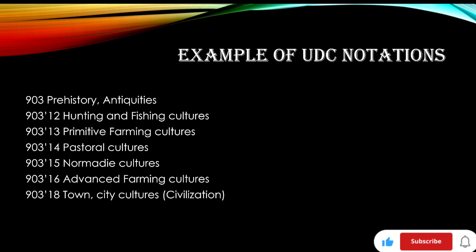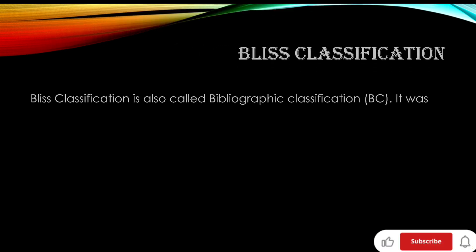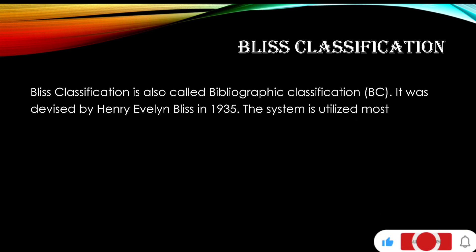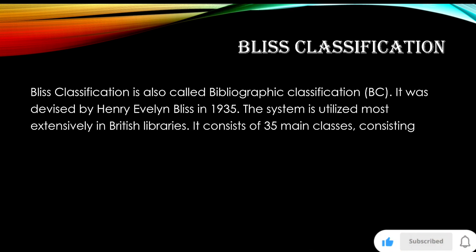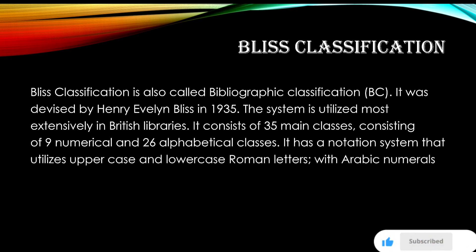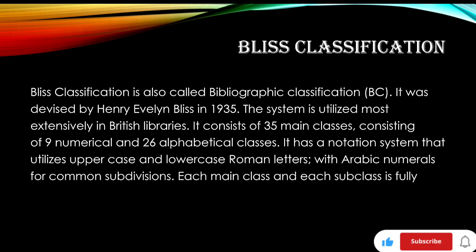Bliss Classification, also called Bibliographic Classification (BC), was devised by Henry Evelyn Bliss in 1935. The system is utilized most extensively in British libraries. It consists of 35 main classes — 9 numerical and 26 alphabetical. It has a notation system that utilizes uppercase and lowercase Roman letters, with numerals for common subdivisions. Each main class and each subclass is fully faceted.